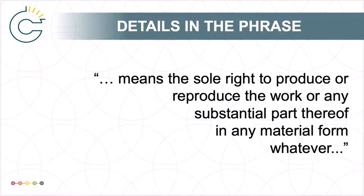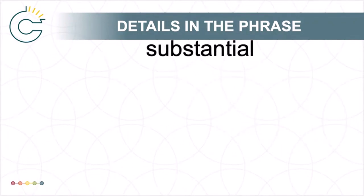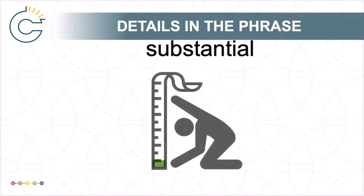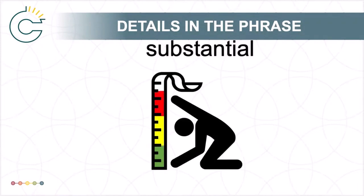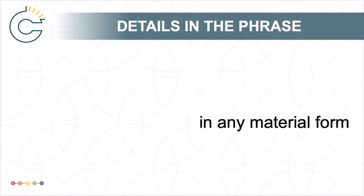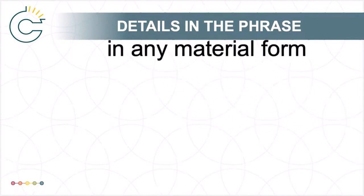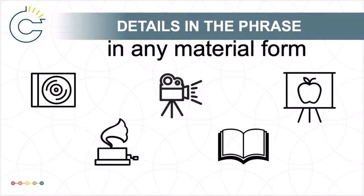Another crucial term is "substantial." While determining what may constitute substantial or non-substantial isn't the focus of this module, the inclusion of this word means that in some cases, if what you are reproducing is a very small and non-central piece of a work, copyright concerns do not apply. A third key concept is "in any material form." This is an important phrase because it notes that reproduction of copyright-protected material is not tied to a specific media or format, including the format it was originally produced in.